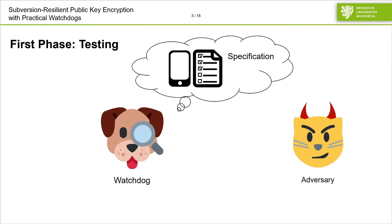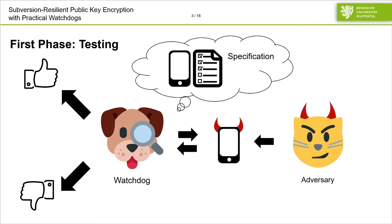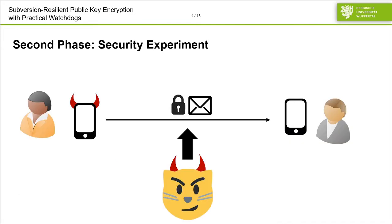In general, in this Watchdog model we have two phases. In the first phase, the Watchdog tests the implementation provided by the adversary. For this, the Watchdog is aware of a specification, so it knows the input and output behavior of the scheme considered. The Watchdog can test via black-box access whether the implementation conforms to the specification. This is done by oracle queries, comparing the input and output behavior. According to this test, the Watchdog then either approves the implementation or discards it. Then in the second phase, we have a security experiment, depending on which primitive you consider. The main twist is that instead of an honest implementation, you use the implementation provided by the adversary to compute, for instance, the challenger's ciphertext.